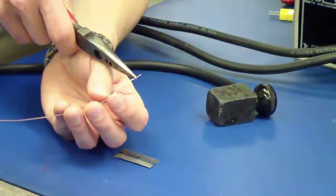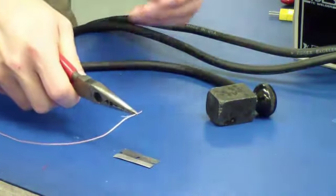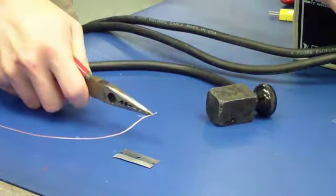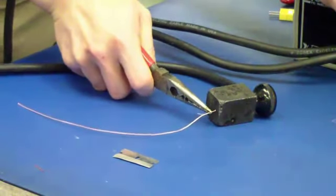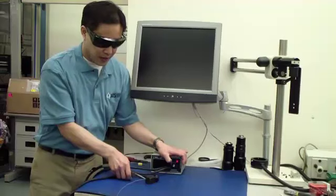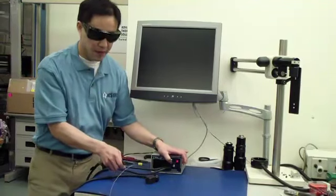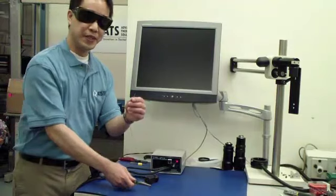You hold the bare strands with these grounding pliers and touch it right up against the electrode. And there you have the thermocouple bead.